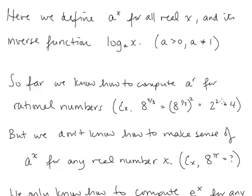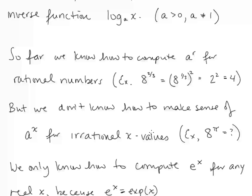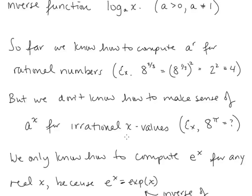So far, we know how to compute a to the r for rational numbers — this is something we've reviewed in pre-calculus. For example, 8 to the 2/3 can be computed by taking 8 to the 1/3 power and that result squared, so that becomes 2 squared, or 4. But we don't know how to make sense of a to the x for irrational x values. For example, how do we compute 8 to the pi?